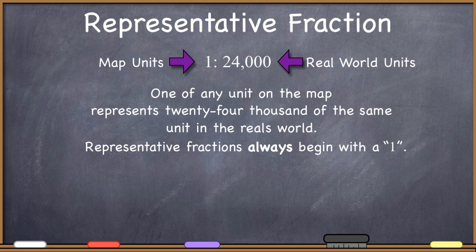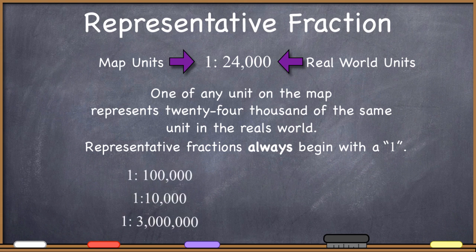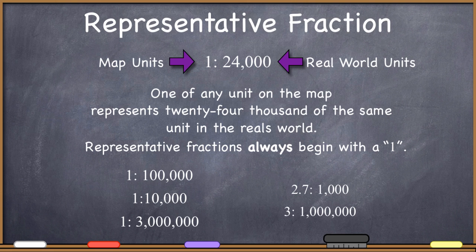Very importantly, representative fractions always begin with a 1. We always give a representative fraction by saying 1 unit on the map represents something in the real world. So all of these are valid representative fractions: 1 to 100,000, 1 to 10,000, 1 to 3,000,000. These over here are not. You need to do some more mathematics to simplify this so that you have 1 map unit or a 1 in that numerator.